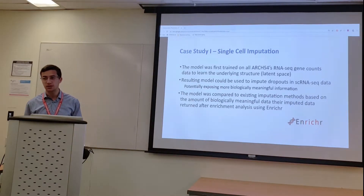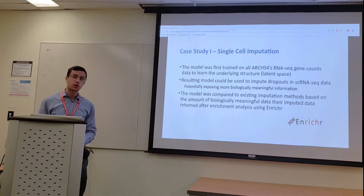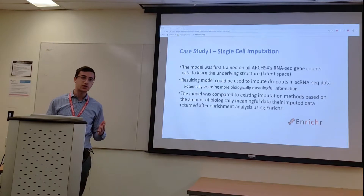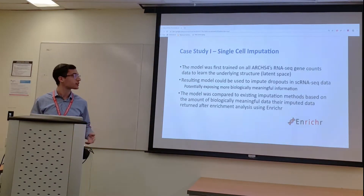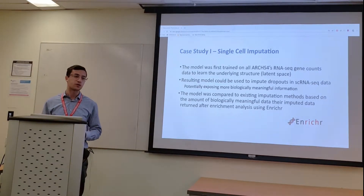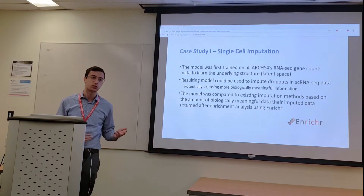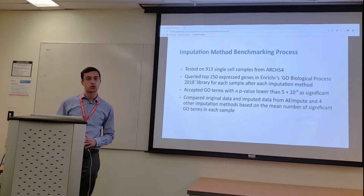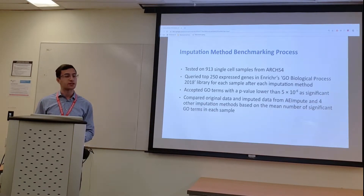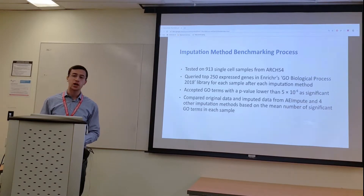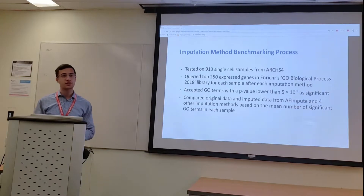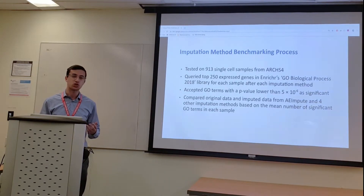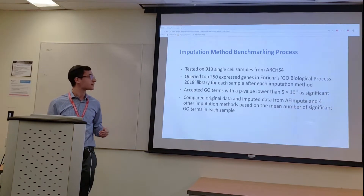The first application which AE-Impute was tested on was single-cell imputation. The model was first trained on ARCHS4's RNA-Seq data to learn the underlying structure of the RNA-Seq data inside the latent space of the autoencoder. To benchmark the resulting model for single-cell imputation, it was benchmarked against four other existing imputation methods by comparing the amount of biologically meaningful information that their imputed data could produce from enrichment analysis using Enrichr. Benchmarking was done on 913 single-cell samples from ARCHS4. For each sample, the top expressed genes were queried in Enrichr's GO Biological Process 2018 library after imputation using AE-Impute and the four other methods to obtain a list of significant GO terms for each method.